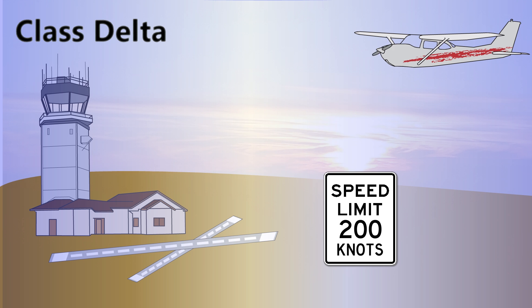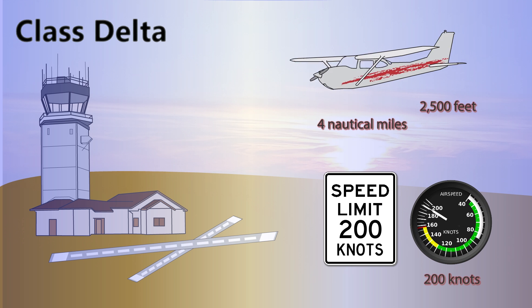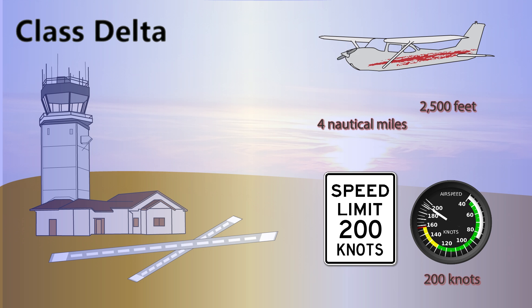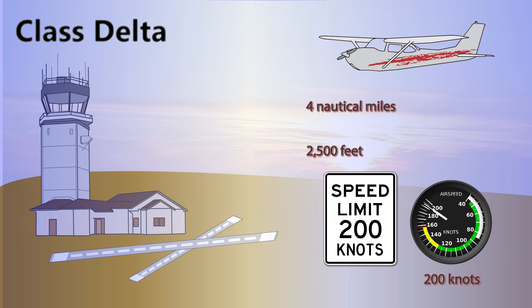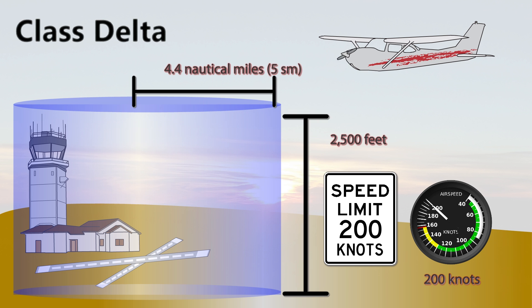We also have a speed restriction while operating close to a Class D airport. The FARs, particularly Part 91.117, states that unless otherwise authorized or required by ATC, no person may operate an aircraft at or below 2,500 feet above the surface within four nautical miles of the primary airport of a Class C or Class D airspace area at an indicated airspeed of more than 200 knots. So in other words, we are not permitted to fly faster than 200 knots indicated within Class D, or more specifically within four nautical miles under 2,500 feet AGL of that airport. Since most Class D airspace has a 4.4 nautical mile radius with a ceiling of 2,500 feet AGL, this restriction also falls into the vertical and horizontal dimensions of most Class Ds.